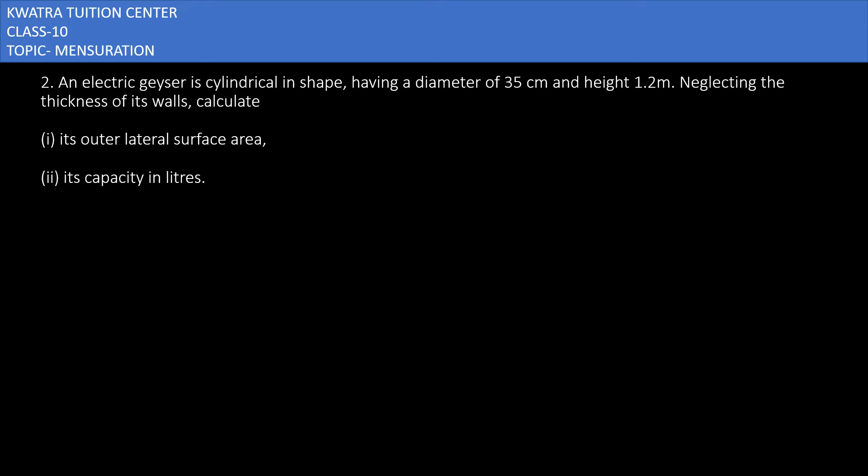Question number 2 says that an electric geyser is cylindrical in shape having a diameter of 35 cm and height of 1.2 meters. We can easily find the radius, and the height is 1.2 meters. You can see that the information is different - height is 1.2 meters and diameter is in cm. So we have to ensure that one unit must be used.